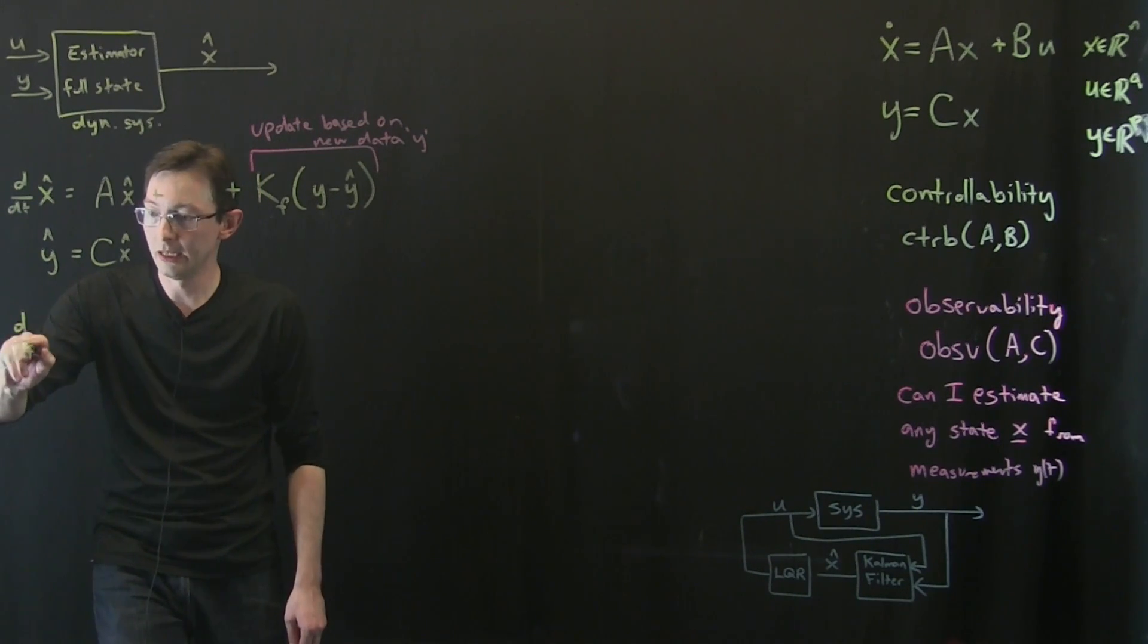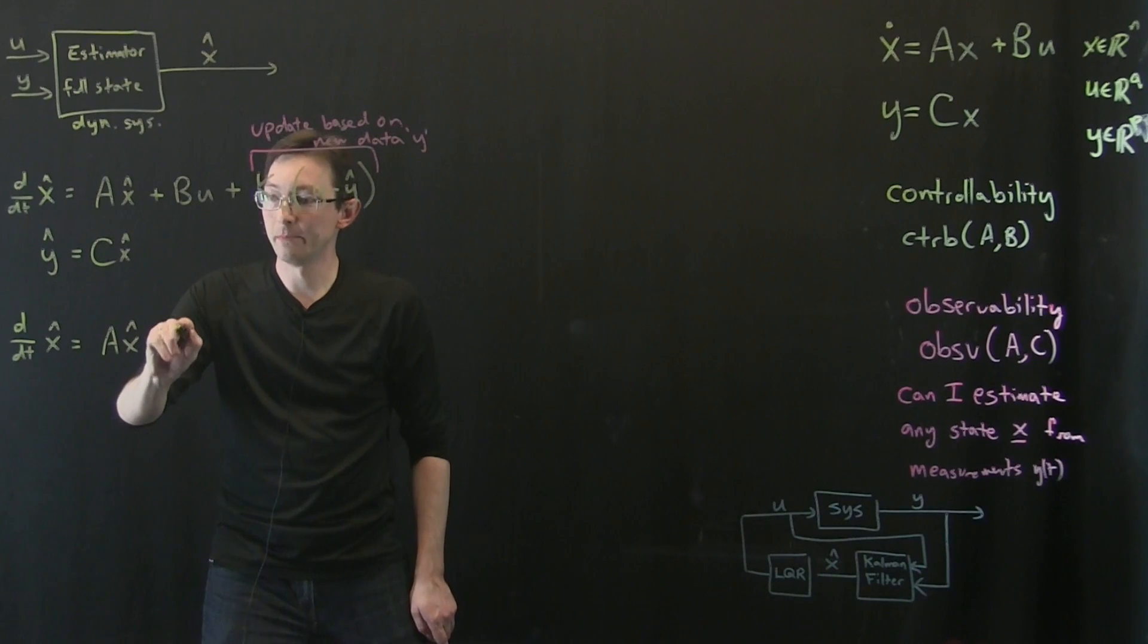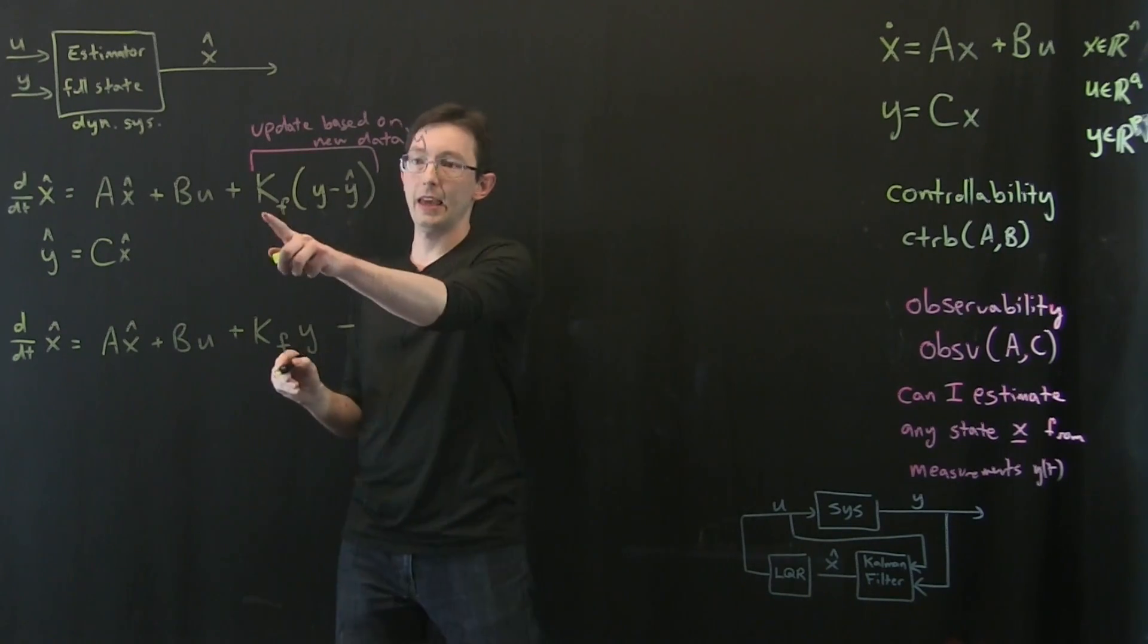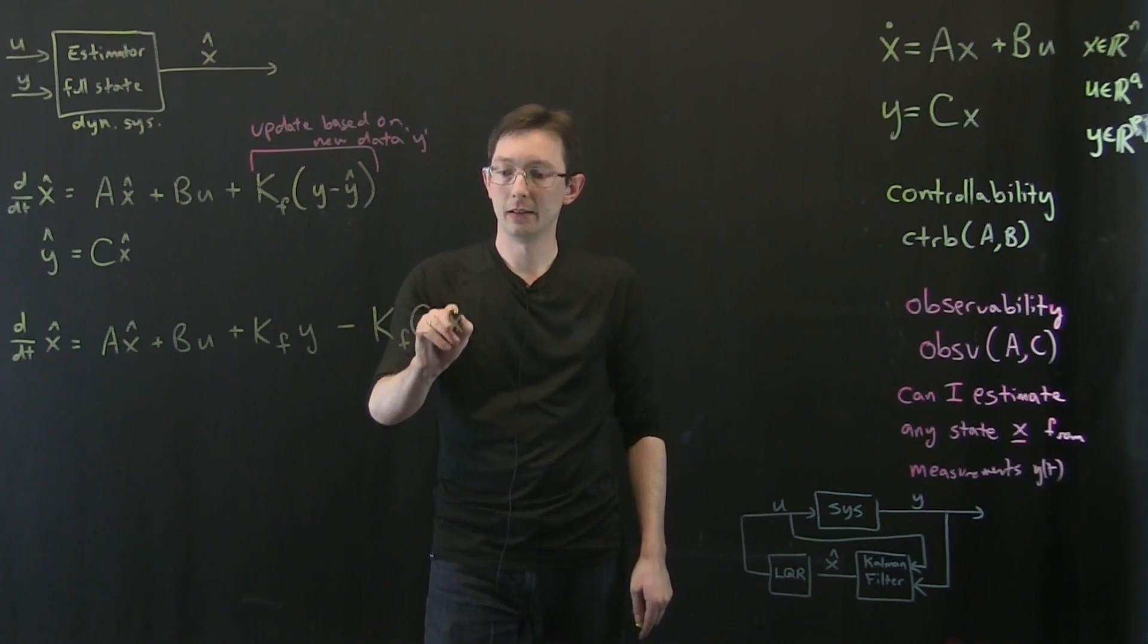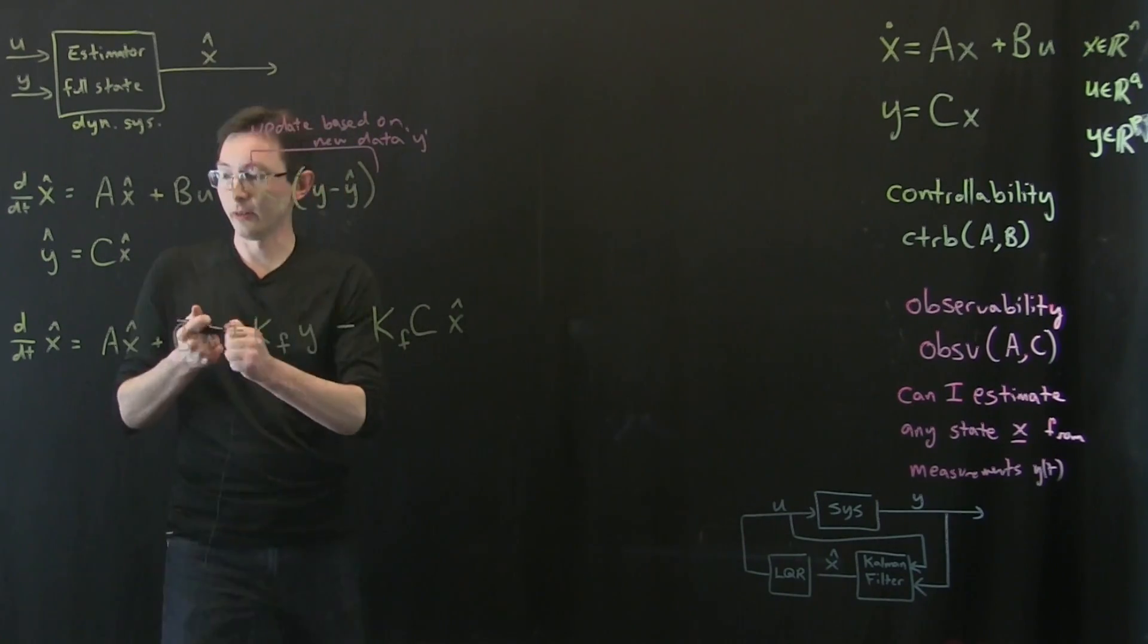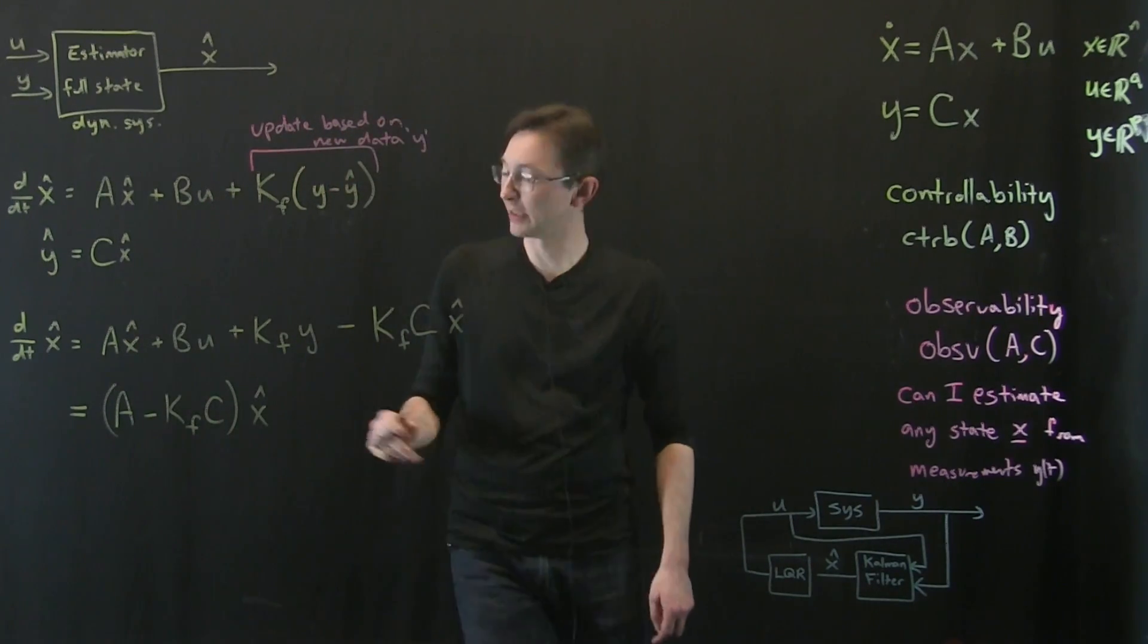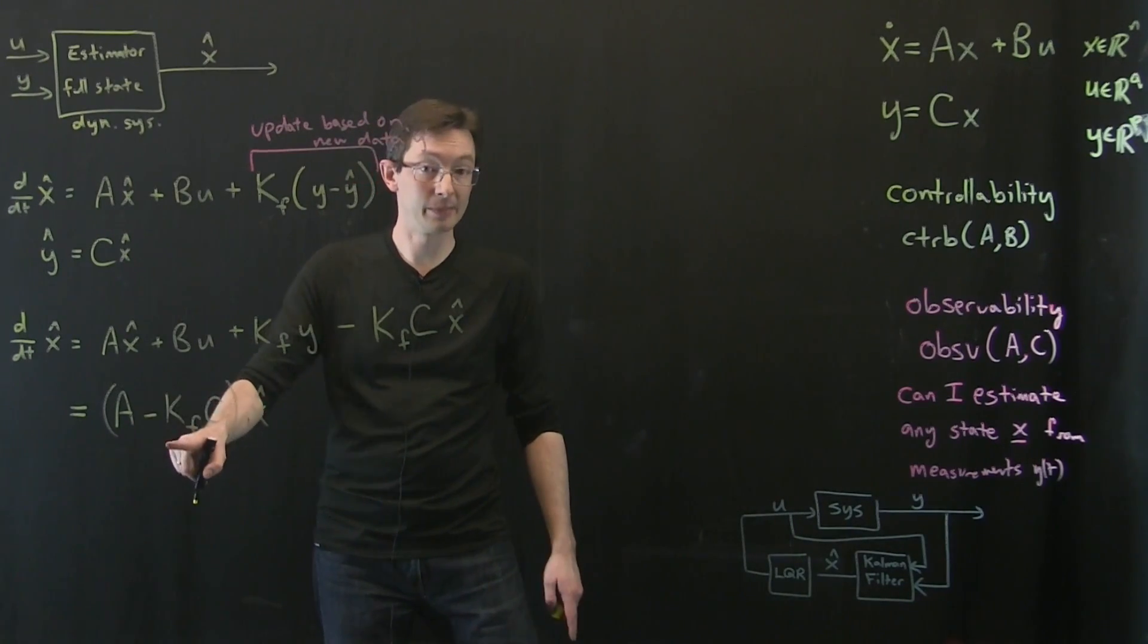What I'm going to do is I'm going to take this expression and I'm going to plug it into here and we're going to see what DDT of X hat really equals. So DDT of X hat equals AX hat plus BU plus KFY minus KFY hat, but Y hat is C times X hat. So minus KFC times X hat. Now this is super cool. What we're going to have here is this equals A minus KFC times X hat.